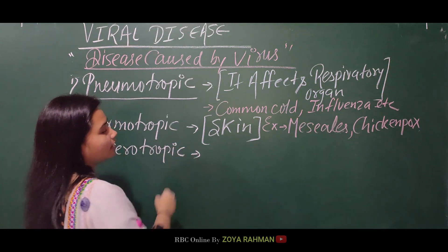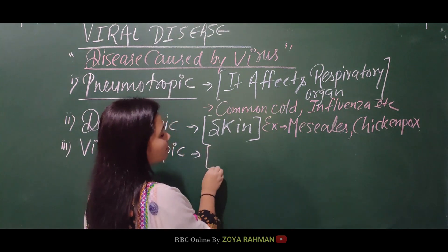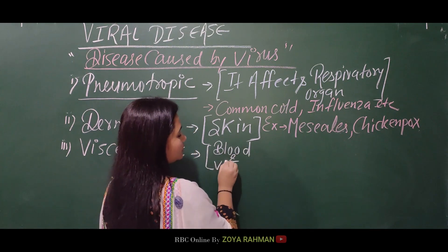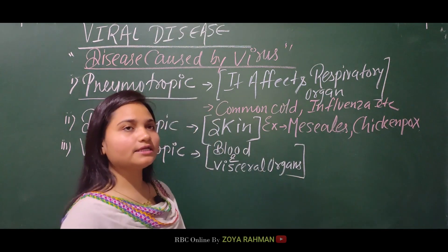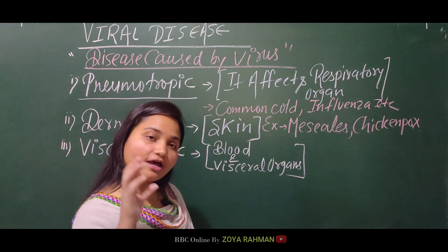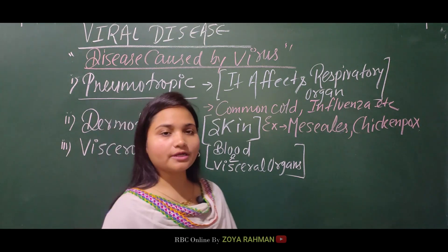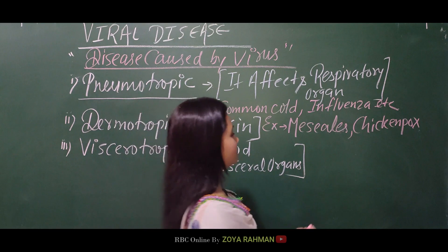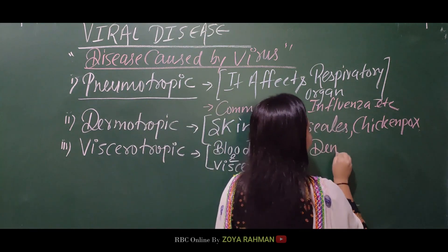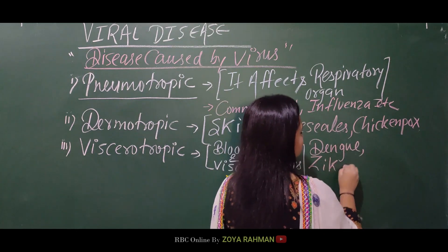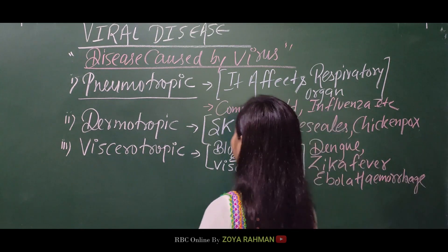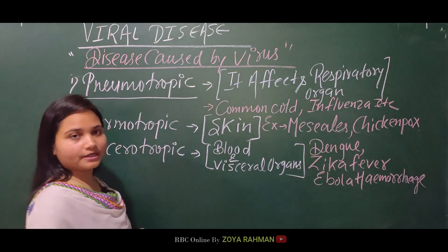The third category is viscerotropic, which refers to viral diseases affecting the blood and visceral organs — the limbs and muscles. Examples include dengue, Zika, Ebola, and hemorrhagic fevers. These are disorders classified under viscerotropic.